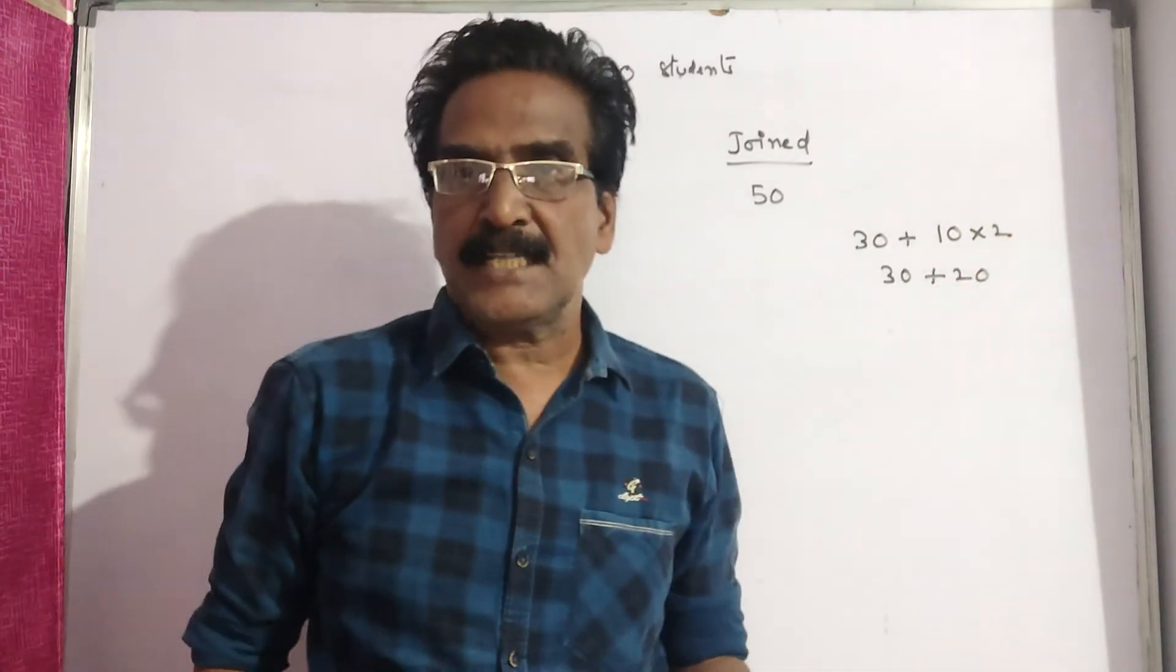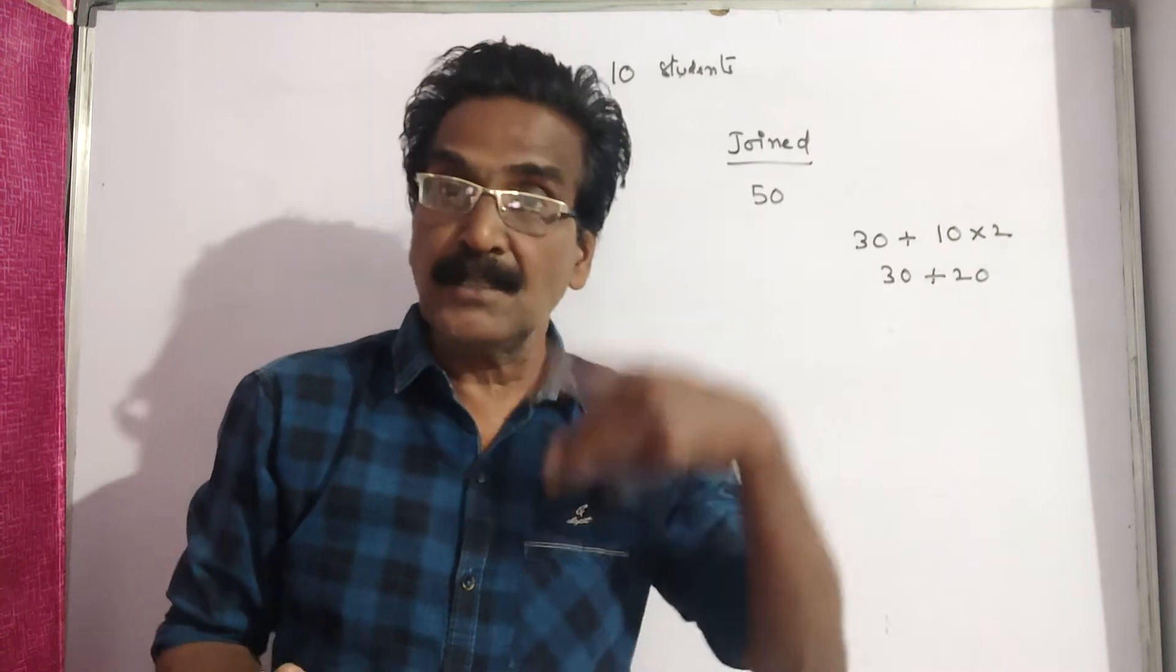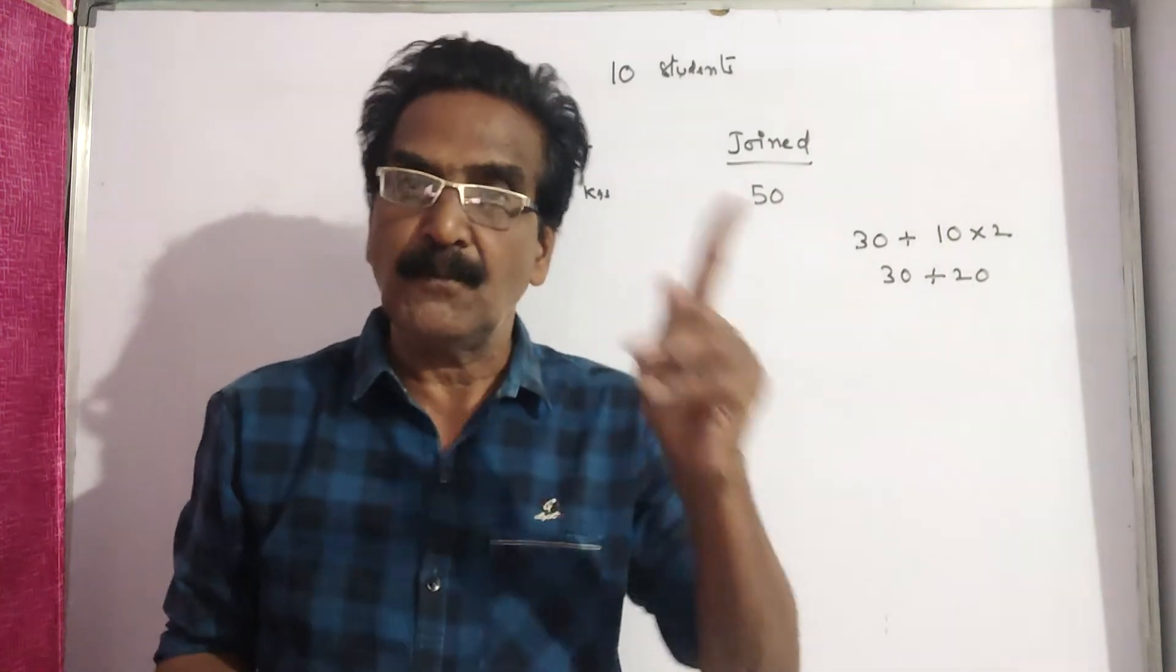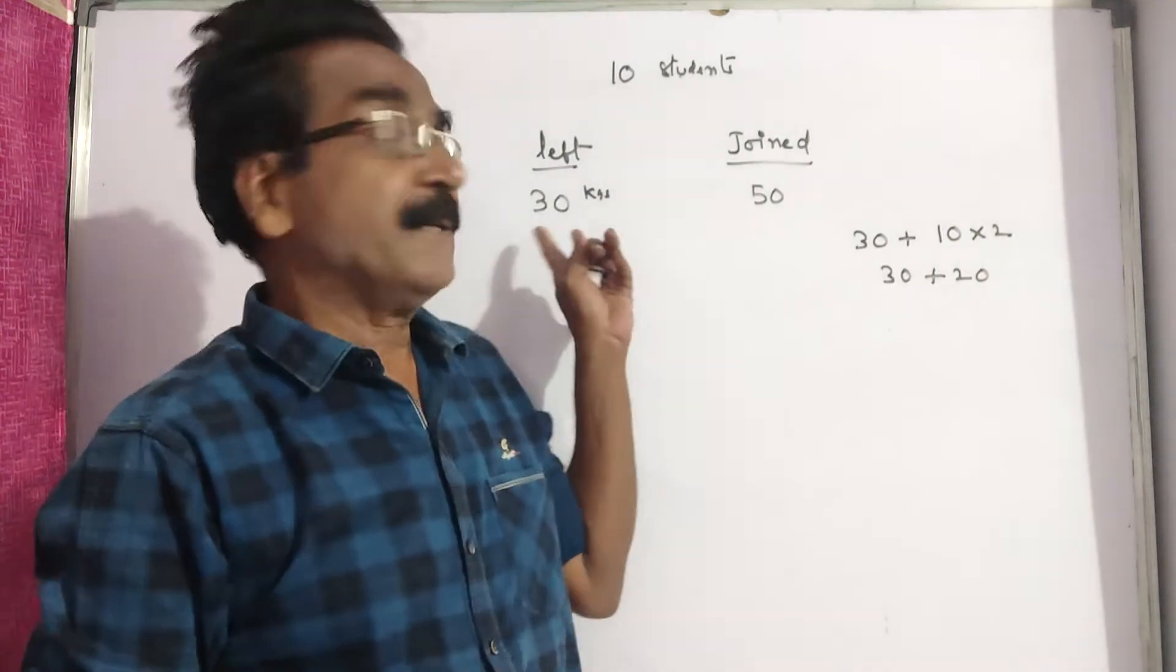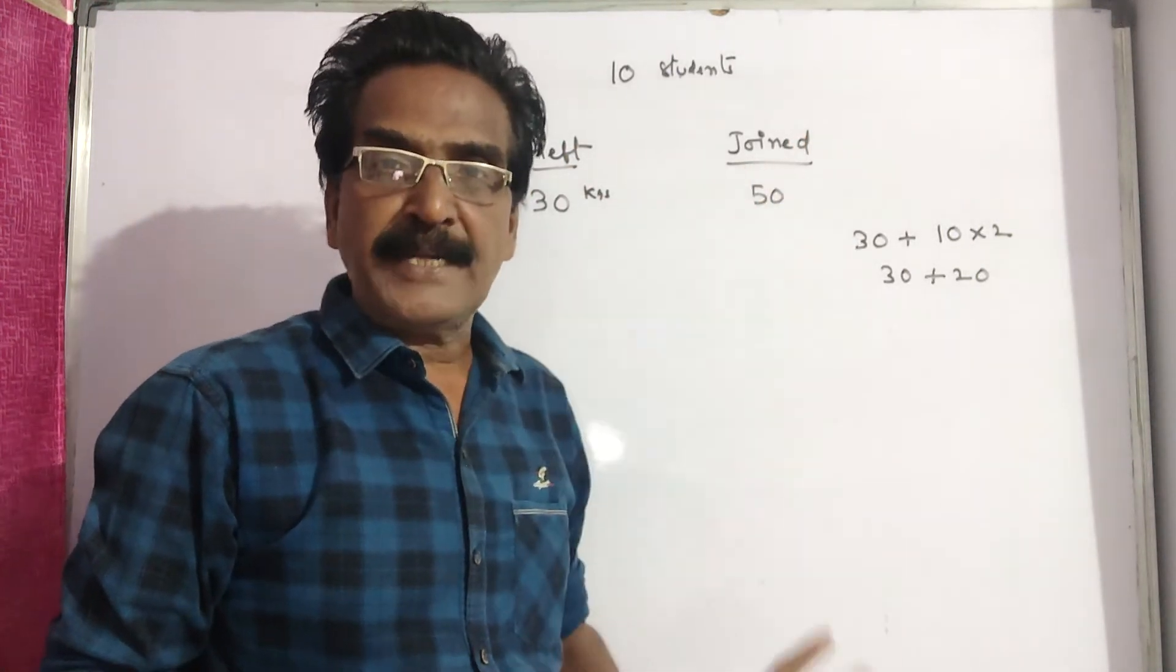Average increased by 2 kgs means the total increased by 10 into 2, which is 20 kgs. So the new person must be 20 kgs more than the old person who left. 30 kgs person left and 50 kgs person joined.